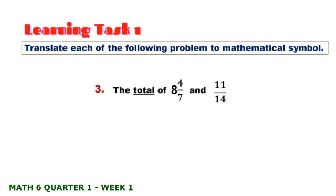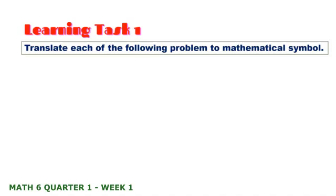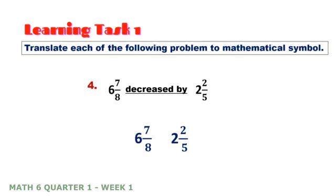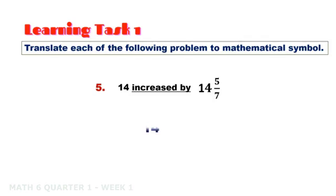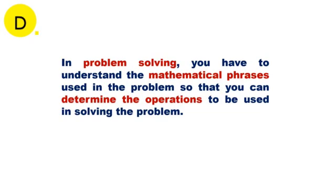Number 3: The total of 8 and 4 sevenths and 11 fourteenths. Number 4: 6 and 7 eighths decreased by 2 and 2 fifths — that is subtraction. Number 5: 14 increased by 14 and 5 sevenths — increase means addition. In problem solving, you have to understand the mathematical phrases used in the problem so that you can determine the operations to be used.